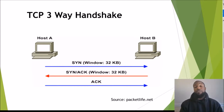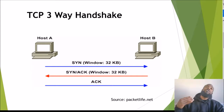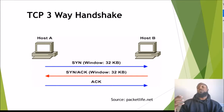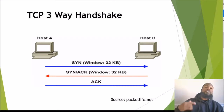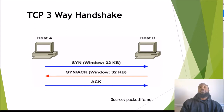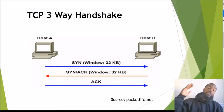Windowing is the mechanism TCP uses to control flow between Host A and Host B. Host A sends messages as fast as it can, expecting an acknowledgement each time. If it sends too many and Host B isn't acknowledging, Host A slows down and scales back how much traffic it's sending.